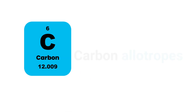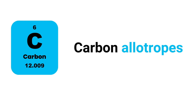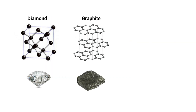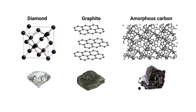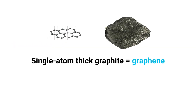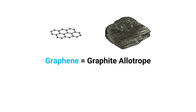Let's begin by talking about some carbon allotropes, or quite simply types of carbon. Carbon exists in various forms such as diamond, graphite, and amorphous carbon to name a few. While they are all based on the same element, each of them have very different properties and applications. The easiest way to think of graphene is that it is a single atom thick sheet of graphite, thereby making it an allotrope or type of graphite.